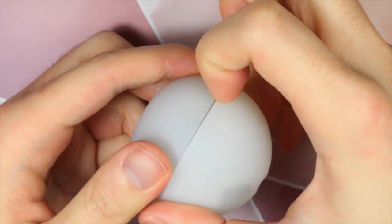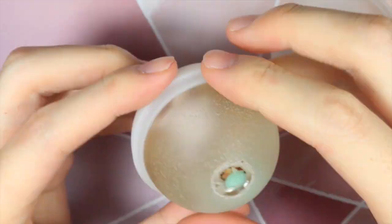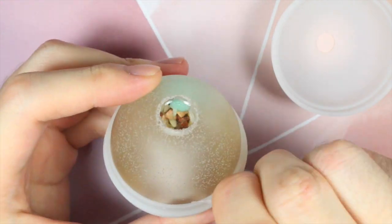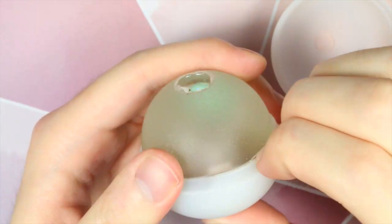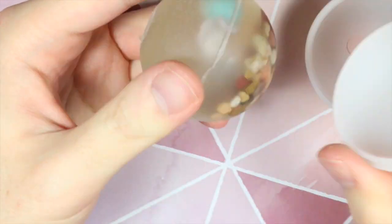After the resin has cured after 24 hours, I'm peeling off the silicone mold off the resin piece. And as you can see, it's a little bit cloudy when you take it out of the silicone mold but it's okay because we're going to glaze it later.